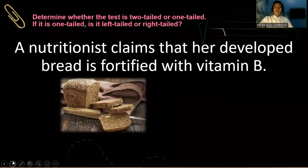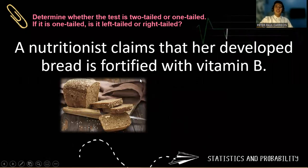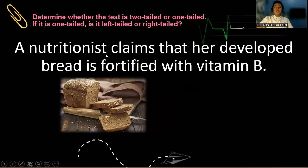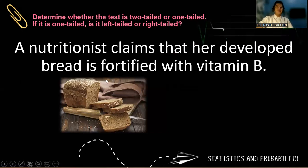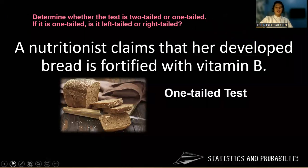Let's have another example. Let's determine whether the test is two-tailed or one-tailed. And if it is one-tailed, let us name it as left-tailed or right-tailed. So a nutritionist claims that her developed bread is fortified with vitamin B. So notice that the word fortified would mean what? Very good. The correct answer is one-tailed, right-tailed.